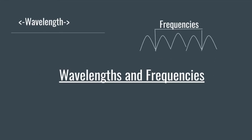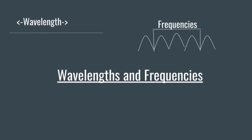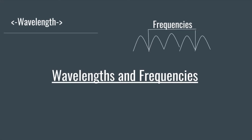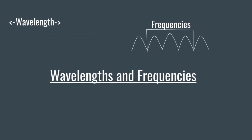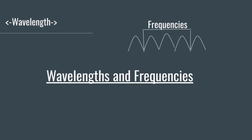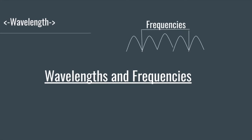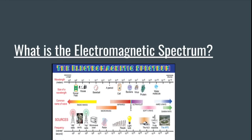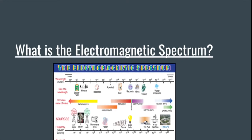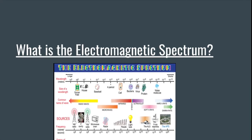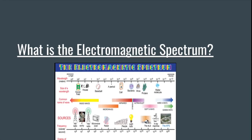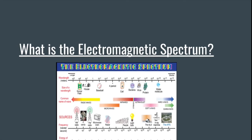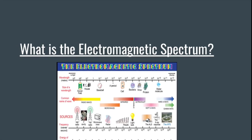Wavelengths are the distance between crests of a wave, also known as the length of a wave. Frequencies are the rate at which something is repeated over a particular period of time. The electromagnetic spectrum is a way to describe the entire range of light and displays all types of electromagnetic radiation. There are seven types of electromagnetic radiation in our spectrum.